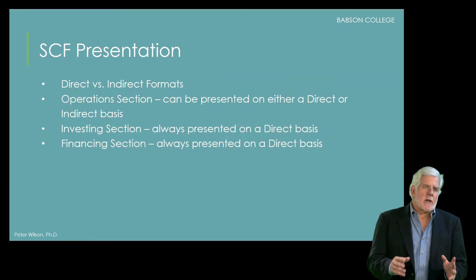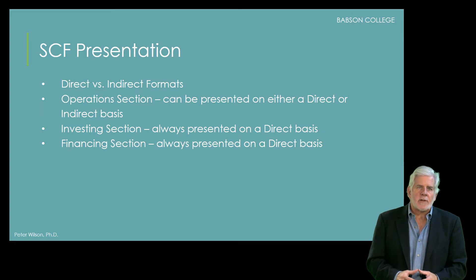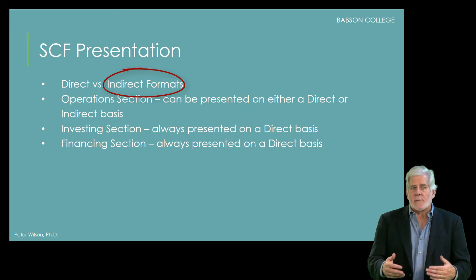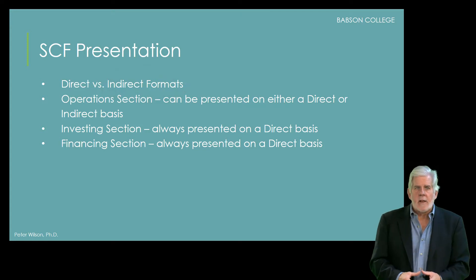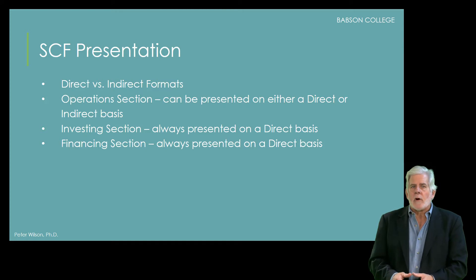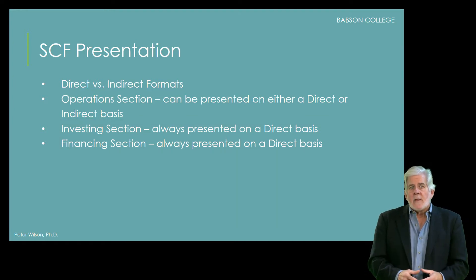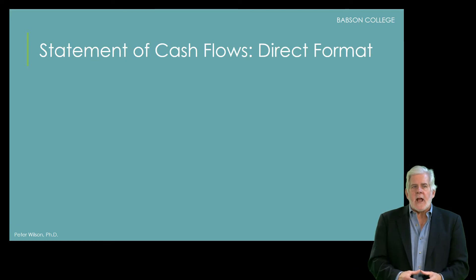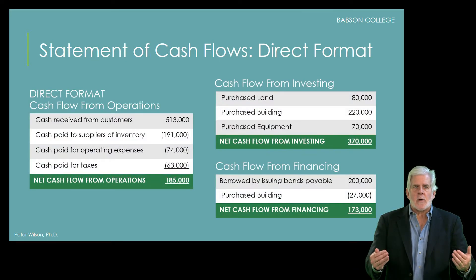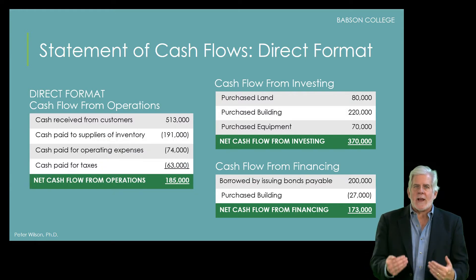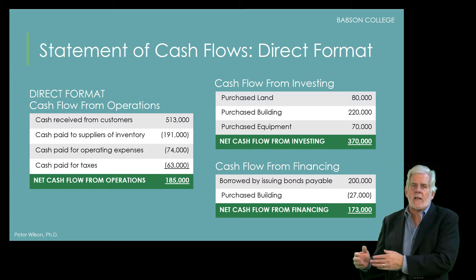One thing that can be a little tricky when reading a statement of cash flows is that most firms use what is called the indirect format for the statement, as opposed to the direct format. These terms — direct and indirect — refer only to how the operations section is presented. The investing and financing sections are always presented using the same format. This is what a direct format statement of cash flows looks like: the operations section shows line items for the direct cash inflows and cash outflows, just as happens in the investing and financing sections.